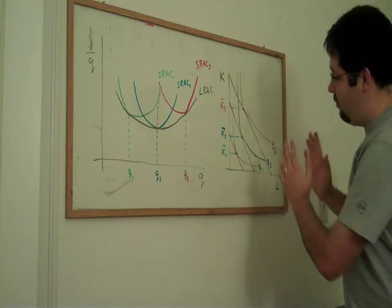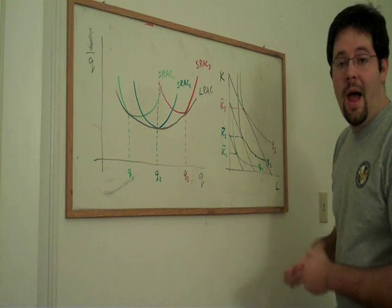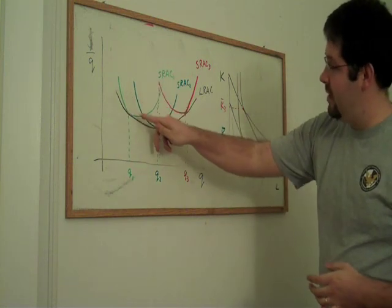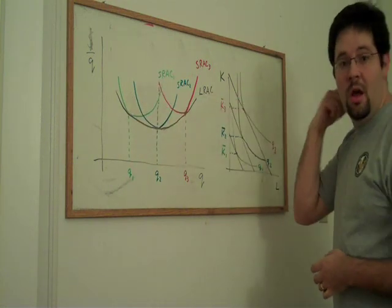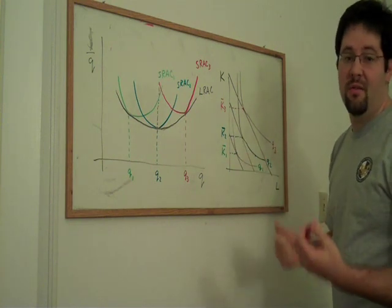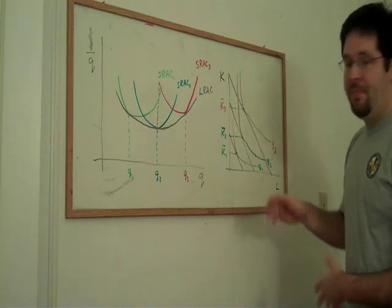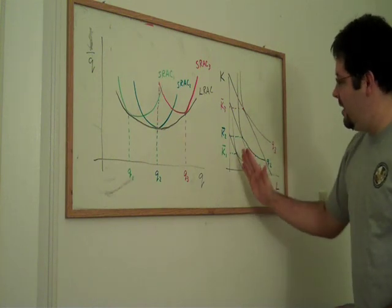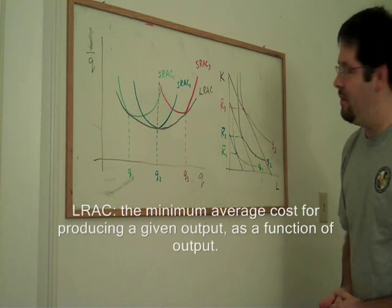If I can trace out the quantities and the dollar amounts that it takes to actually get on this iso-cost and relate those two to one another, I can go ahead and trace out this long run average cost curve. These tangencies are what allow us to get our long run average cost curve.